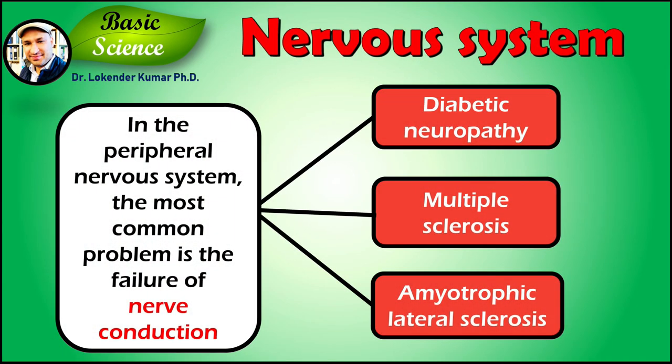The medical specialty of neurology studies disorders of the nervous system and looks for interventions that can prevent or treat them. In the peripheral nervous system, the most common problem is the failure of nerve conduction, which can be due to different causes including diabetic neuropathy and demyelinating disorders such as multiple sclerosis and amyotrophic lateral sclerosis. We will discuss each disorder in detail with main emphasis on the molecular mechanisms of the disease in our future videos, so please stay tuned to the channel.